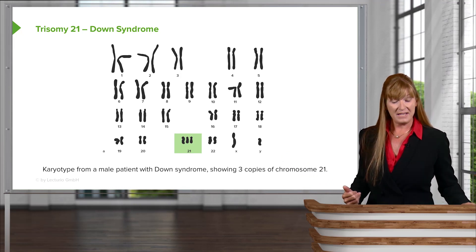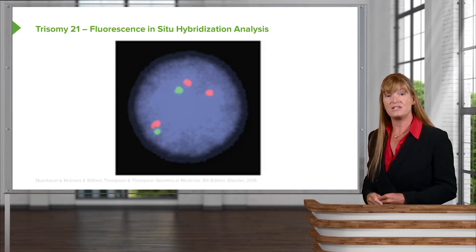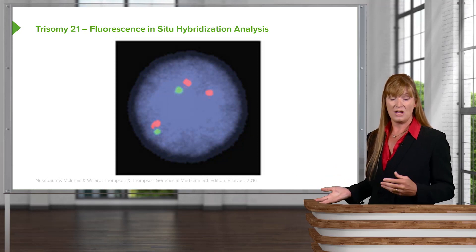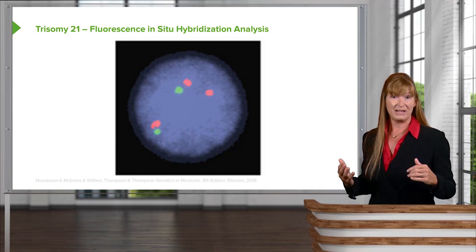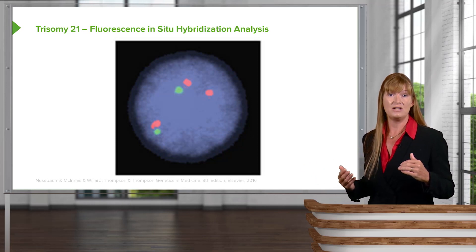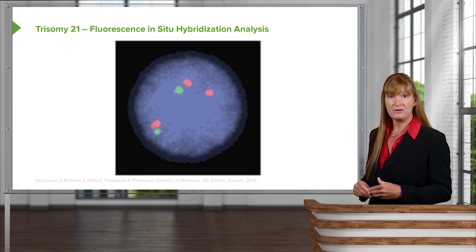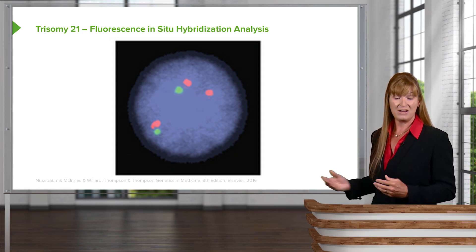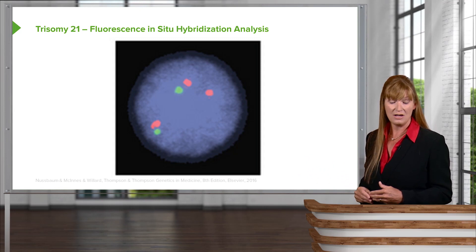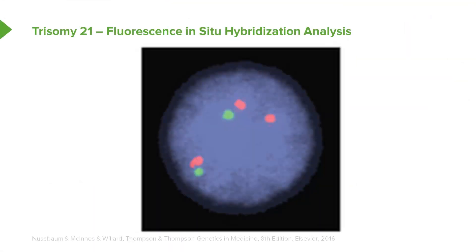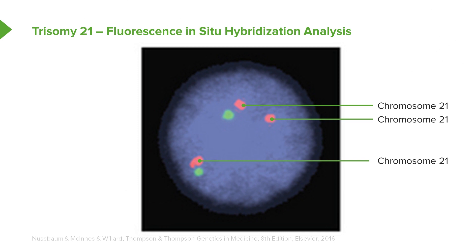Let's take a look at one of the visualization techniques that we might use during pre-implantation or peri-implantation diagnosis or amniocentesis. Here is a graphic of FISH — fluorescence in situ hybridization. The chromosomes have been stained: chromosome 21 has been stained in red fluorescence, and chromosome 13 is stained in green fluorescence. You can clearly see that there are three chromosome 21s.